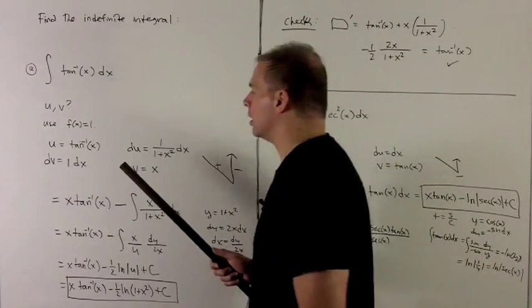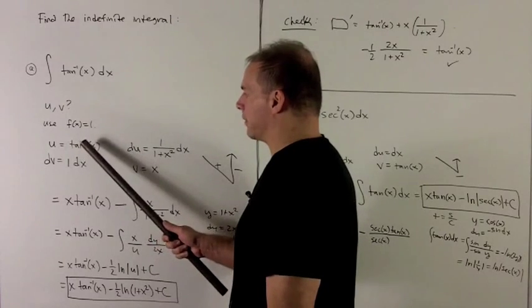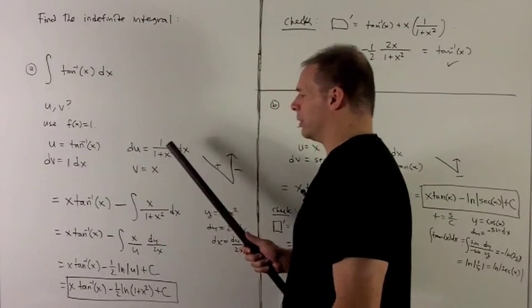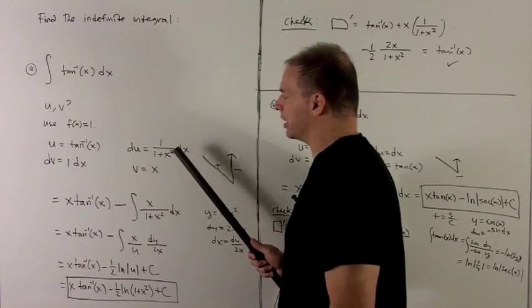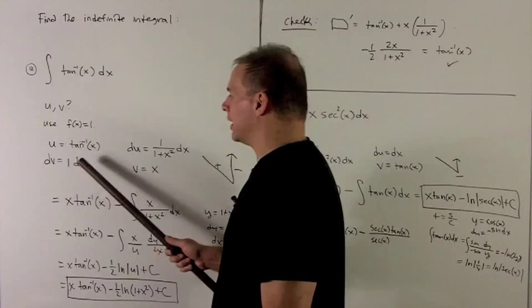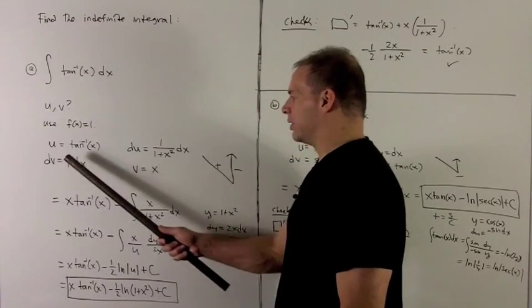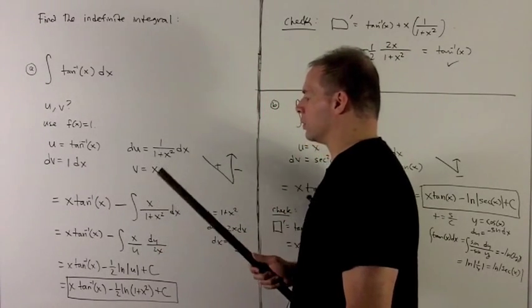So let's see what happens. So I'm going to have my u equal to inverse tangent. du is going to be one over one plus x squared dx. That's the rule for a derivative of inverse tangent. If dv equals one dx, and so when I take the antiderivative, that's just going to give me v equals x.